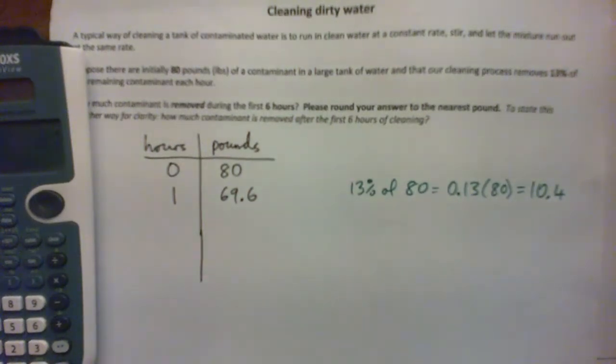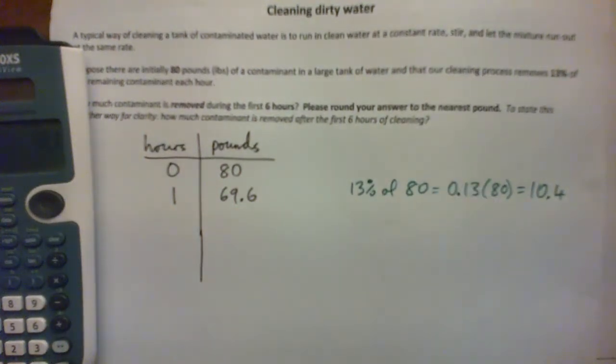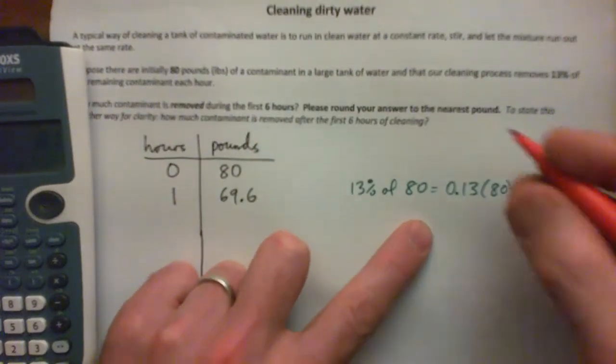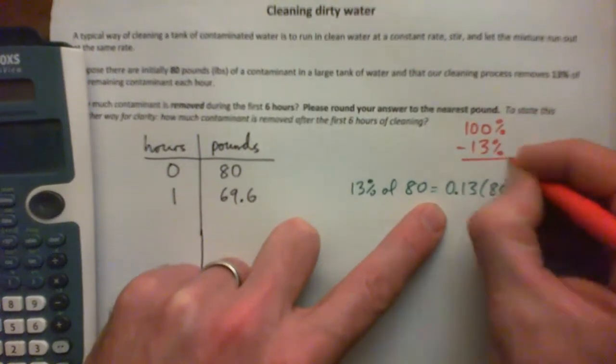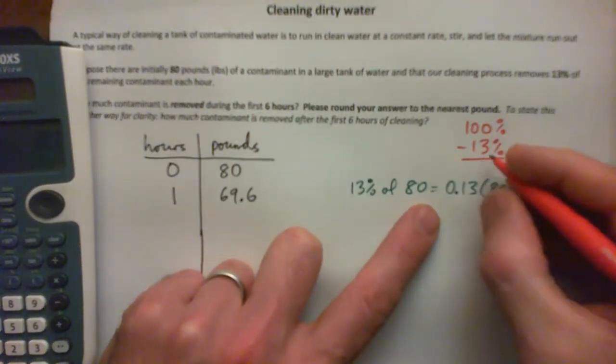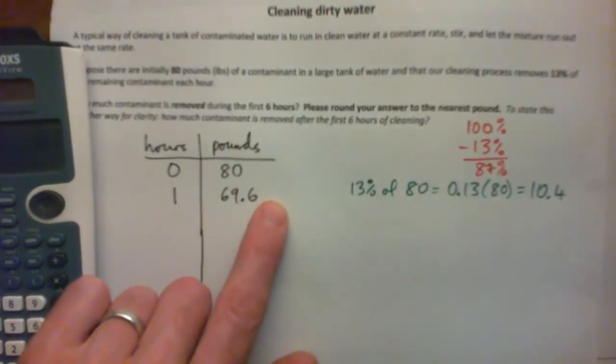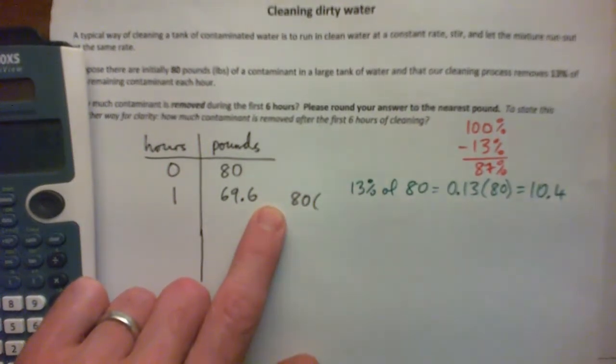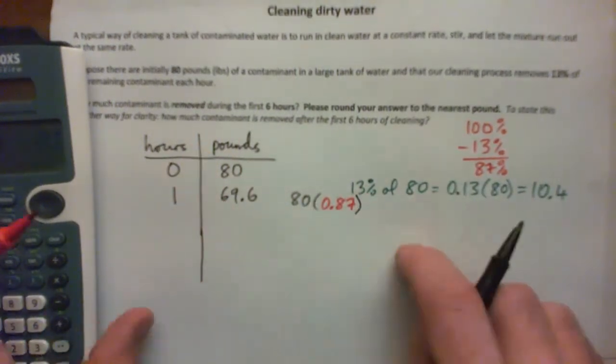But the cooler way of doing this is instead of getting 13% and then subtracting, we can do it all in one step. Think of, what is 100% minus 13%? It gives 87%. That's really handy because it's a lot cooler to go 80 times 87%, 0.87.